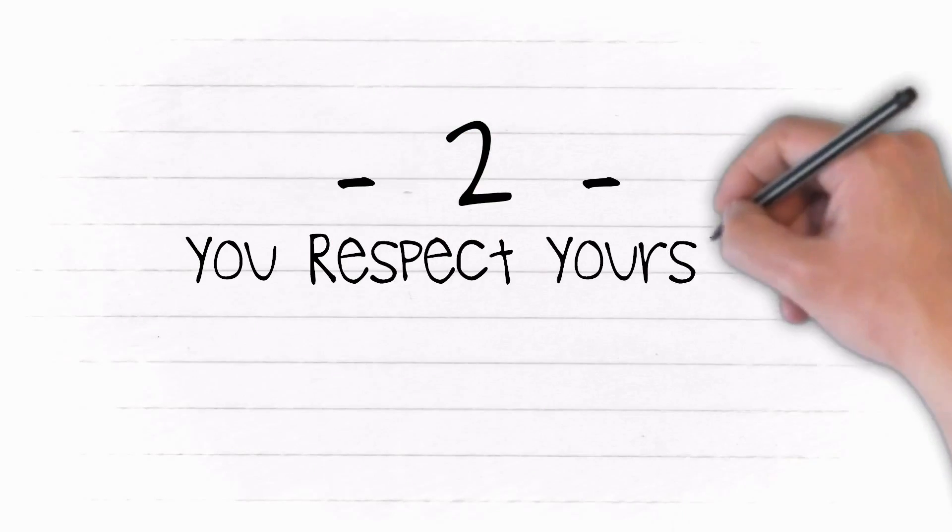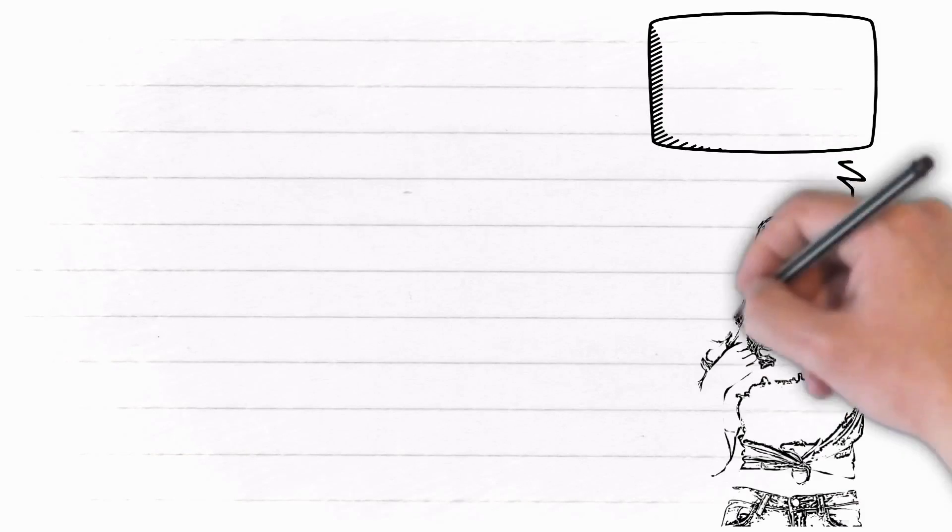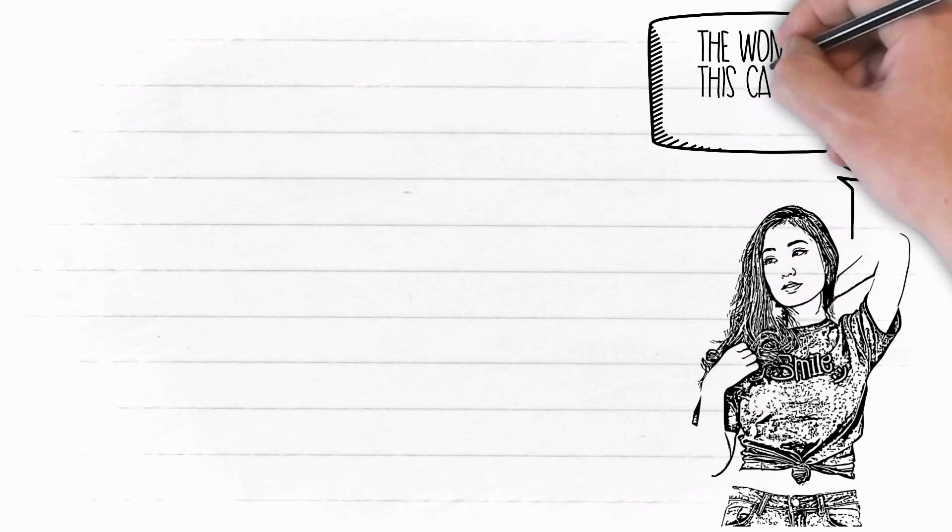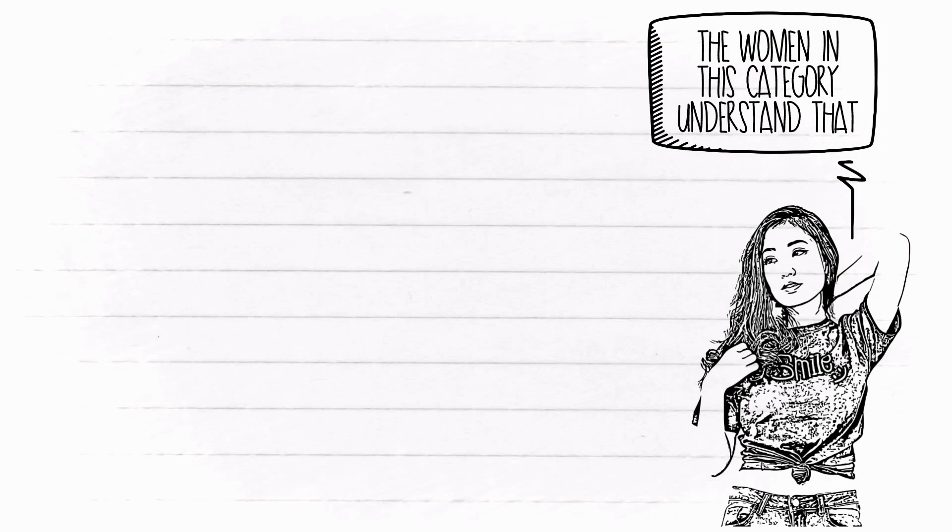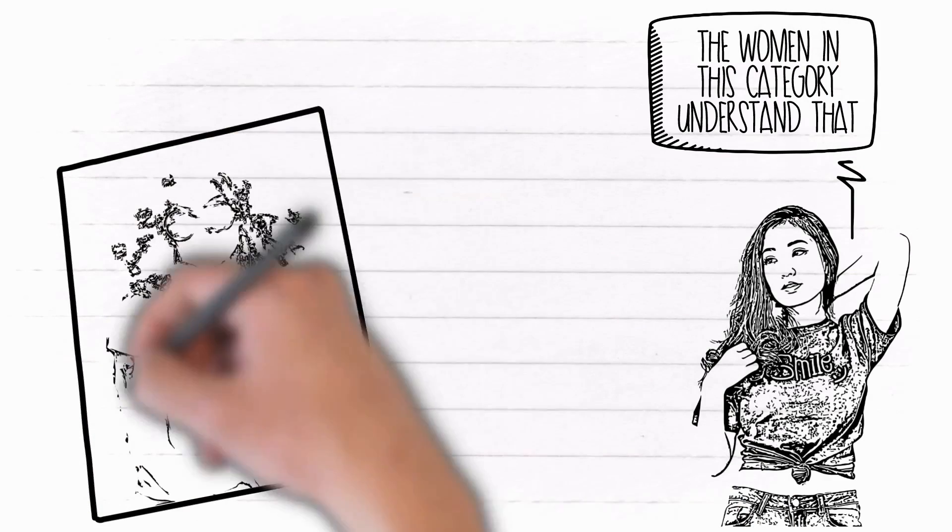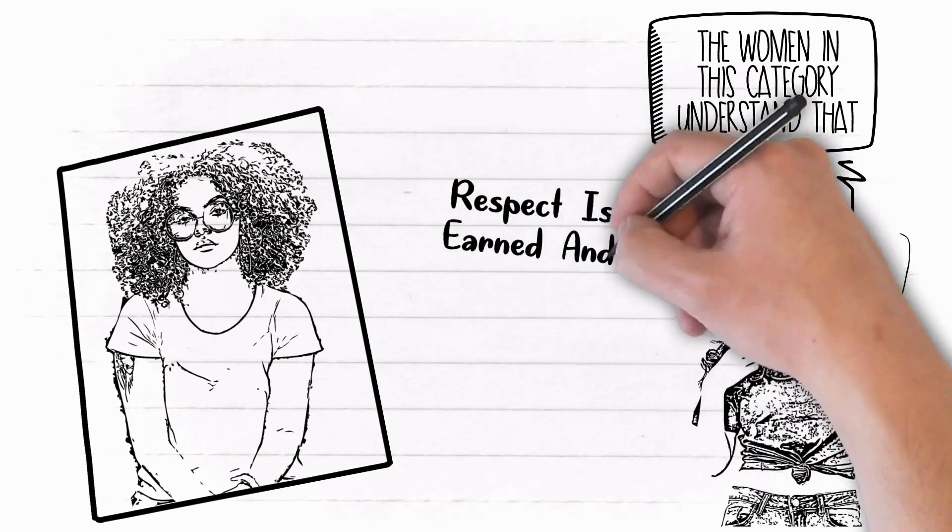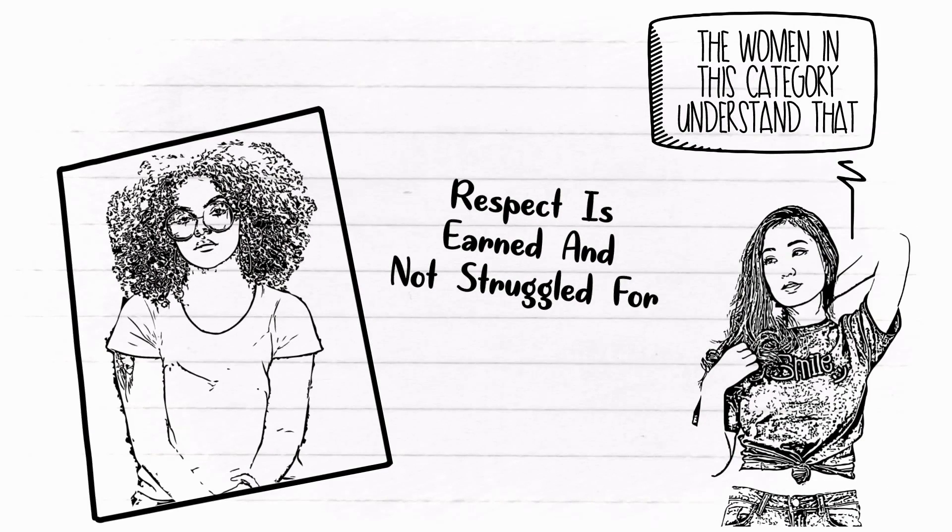2. You respect yourself and others. For one to be respected, there is no need to be strict or dissociate yourself from people so that they'll respect you. The women in this category understand that. They even associate very closely with people, but they are very conscious of all their actions and conduct. Respect is earned and not struggled for. Provided you give yourself the right courage and comportment, it flows naturally.